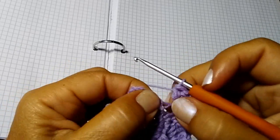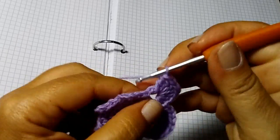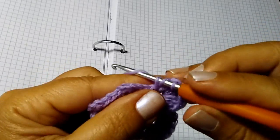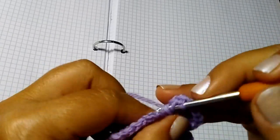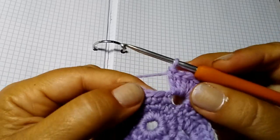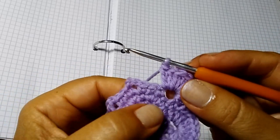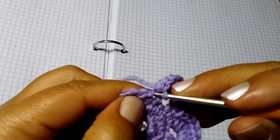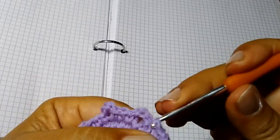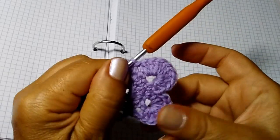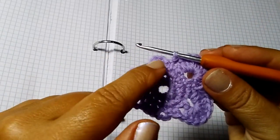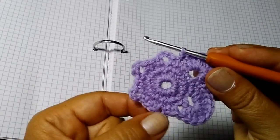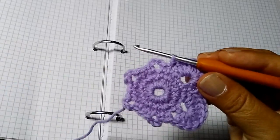6, 7, 8 e 9. Una maglia bassissima nella seconda di queste 3 maglie alte. Continuiamo in questo modo fino ad andare a completare, a riempire tutti i tre i petali.